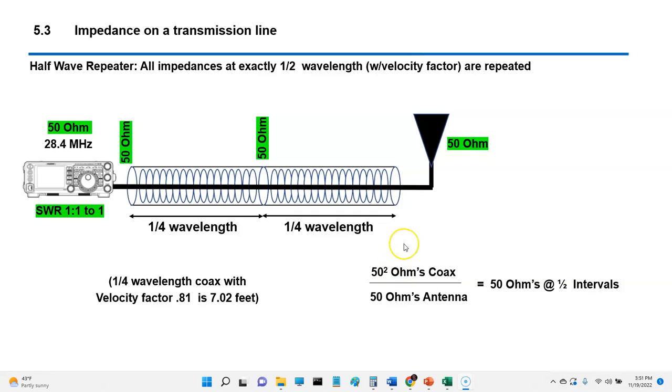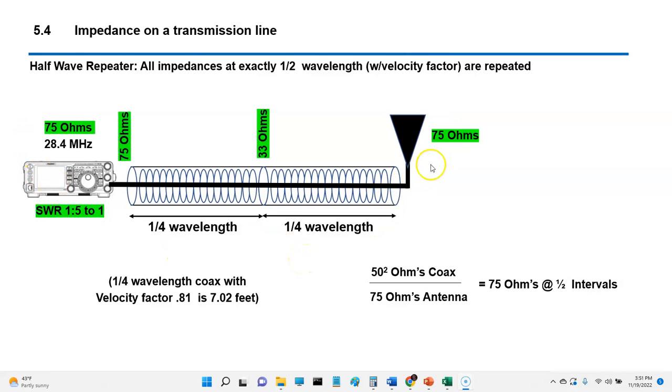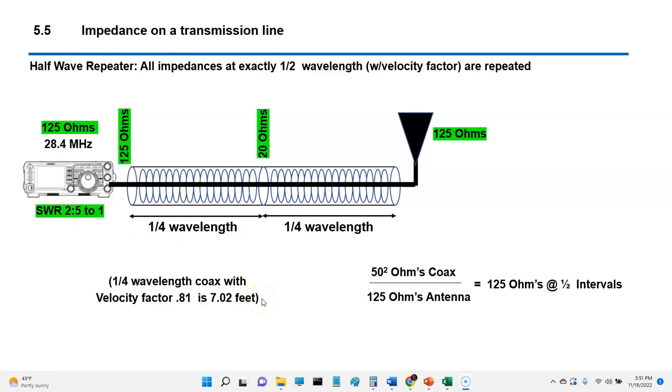Now, half-wavelength, this is where we're going into the repeater mode again, so everything that's 50 ohms will be 50, 50, 50, all the way across. 75 ohms, of course, here at a quarter-wave, it's going to invert to 33 ohms, but it doesn't matter because at a half-wave, we're repeating the impedance that's here at this point. It's being repeated here at the radio, 75 ohms. 125 ohms, same thing here, quarter-wave, we're at 20 ohms. But if we go to a half-wave, we're now repeating that impedance. Again, frequency and wavelength and velocity factor all have to stay the same. If you change any of those, all this changes.